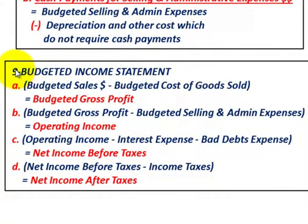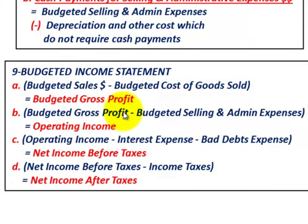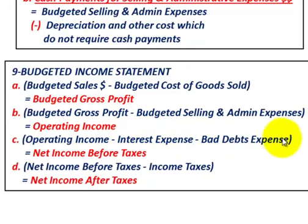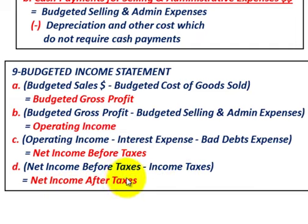For the budgeted income statement, number nine: item A, budgeted sales minus budgeted cost of goods sold equals budgeted gross profit. Item B, budgeted gross profit minus budgeted selling and administrative expenses equals operating income. Item C, operating income minus interest expense minus bad debt expense equals net income before taxes. Item D, net income before taxes minus income taxes equals net income after taxes.